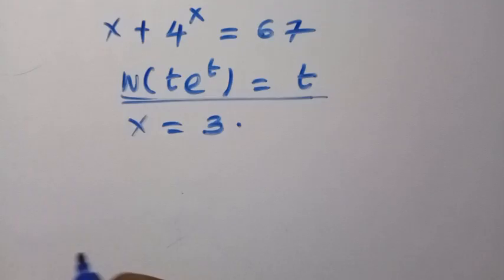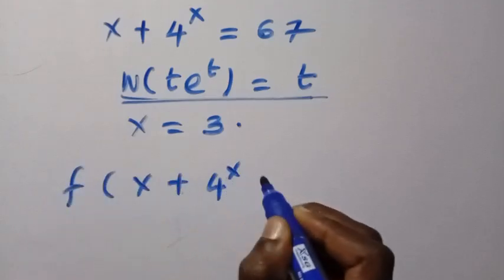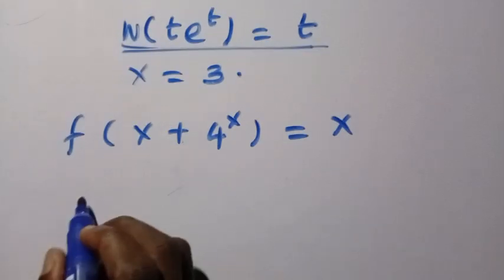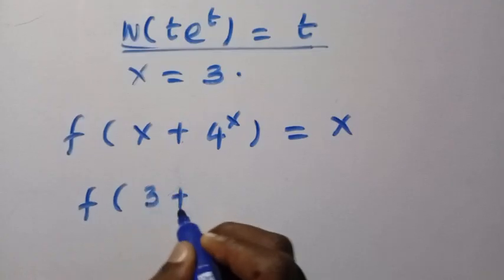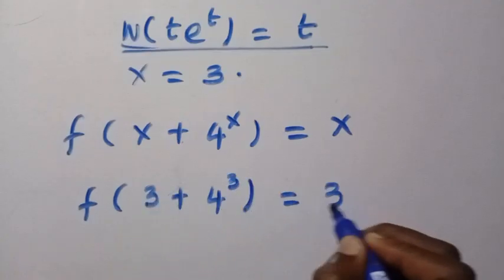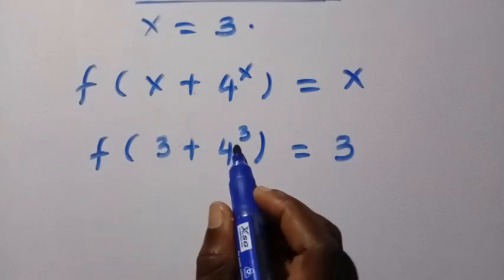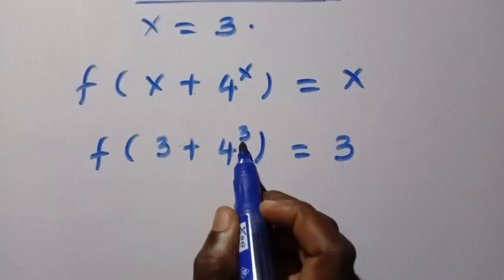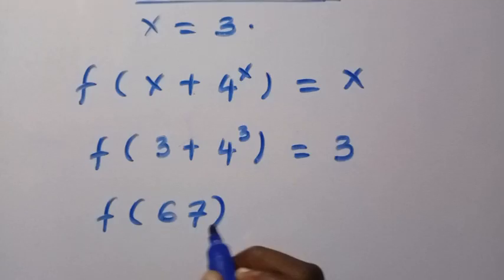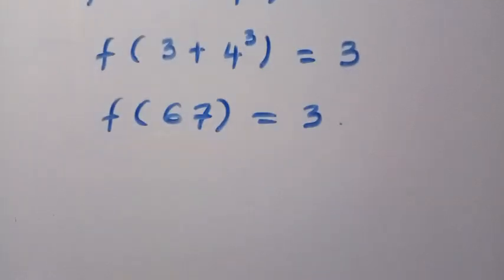f(x + 4^x) = x. At x equals 3, we have f(3 + 4^3) = 3. Then 4^3 is 64, and 64 + 3 gives us 67. So we have f(67) = 3. And by combining the two together.